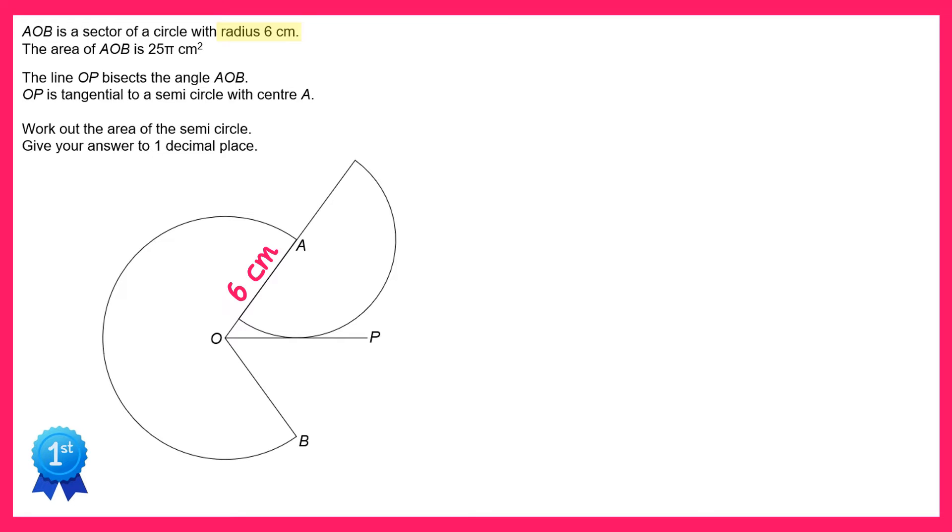We're also told the area of that sector is 25π centimeters squared, so this sector here has an area of 25π. To find the area of any sector you need to know its angle, so let's mark on the angle here. Since we don't know this one we'll call it theta.